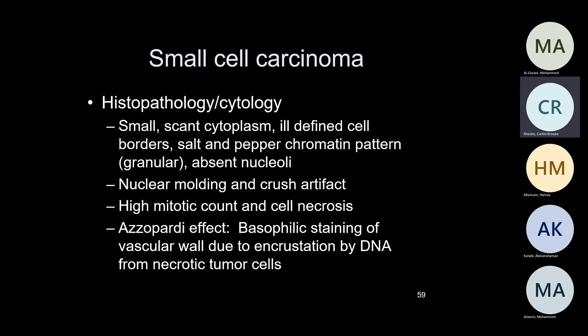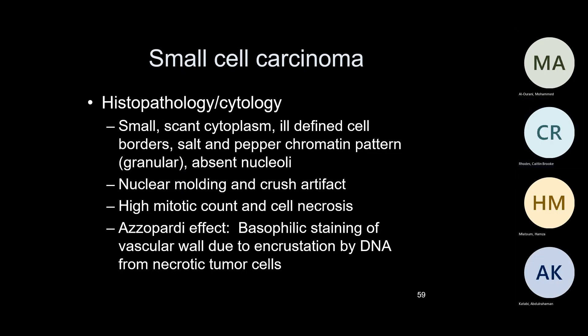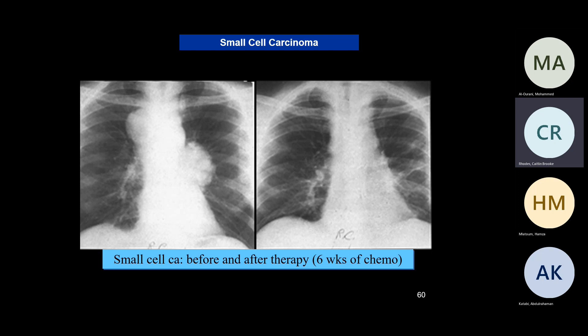Small cell carcinoma cells are very small — about two to three times the size of a lymphocyte. They have scant cytoplasm, ill-defined cell borders, salt-and-pepper chromatin (so-called granular chromatin), absent nucleoli, nuclear molding — one nucleus hugging another nucleus — and crush artifact because these cells break very easily. There are many mitotic figures and necrosis. The Azzopardi phenomenon: the cells break and the DNA lines the vessels. This is a patient with small cell carcinoma before and after six weeks of chemo — after treatment it's pretty much gone, but these tumors come back.